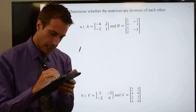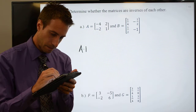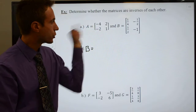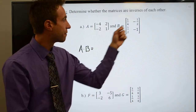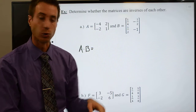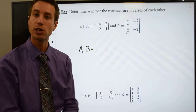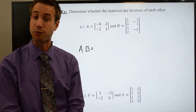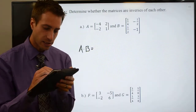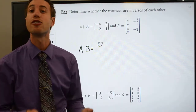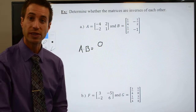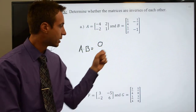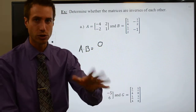We're going to do A times B. Remember the way multiplication works — first row, first column. Negative four times one-fourth: the fours cancel, leaving negative one. Two times one-half: the twos cancel, leaving one. Negative one plus one is zero. Right away I now know that they are not inverses. If this were the identity matrix, that first element would have to be a one — I need a one and a one, and zeros in the other spots. But let's keep going just to make sure.